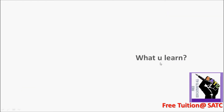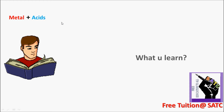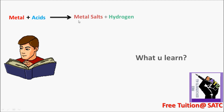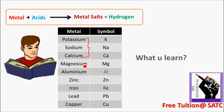So what do you learn? Metal reacts with acids to form the corresponding metal salt plus hydrogen gas. The order of reactivity is: potassium, sodium, calcium, magnesium, aluminium, zinc, iron, copper, lead — from most to least reactive. This is the displacement reaction of metals. Clear?